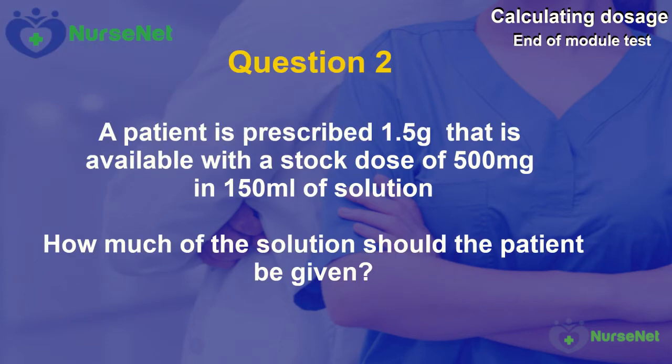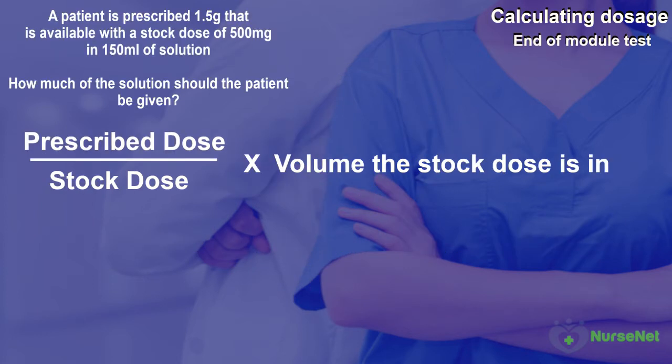Question 2. A patient is prescribed 1.5g of a drug that is available with a stock dose of 500mg in 150ml of solution. How much of the solution should the patient be given? Once again we should have recognised that we can use our basic stock dose calculation of prescribed dose divided by stock dose multiplied by the volume the stock dose is in.